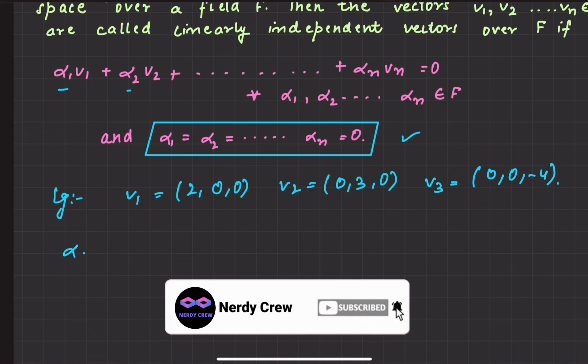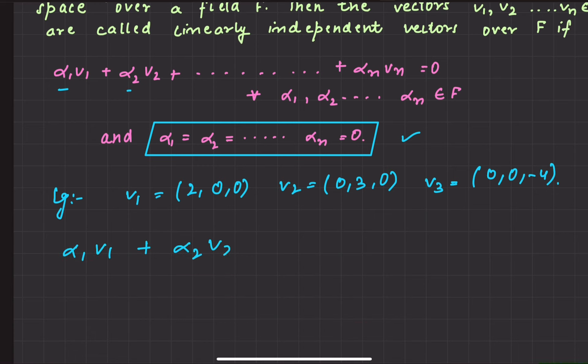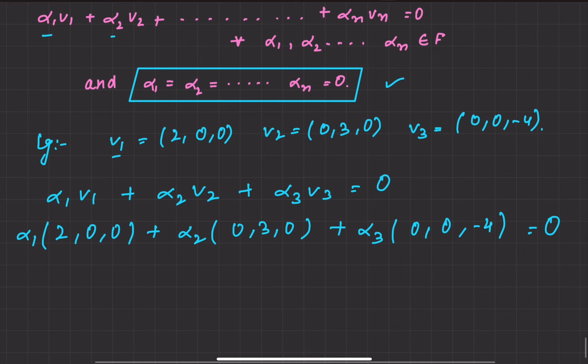Now alpha1 v1 plus alpha2 v2 plus alpha3 v3. Substitute v1: alpha1(2,0,0), alpha2(0,3,0), alpha3(0,0,-4). This is equal to 0. Multiply: 2 alpha1, 0, 0, then 0, 3 alpha2, 0, and last 0, 0, -4 alpha3 is equal to 0.